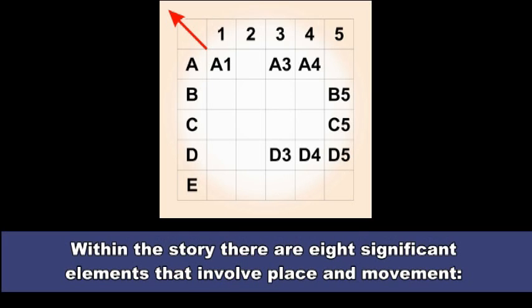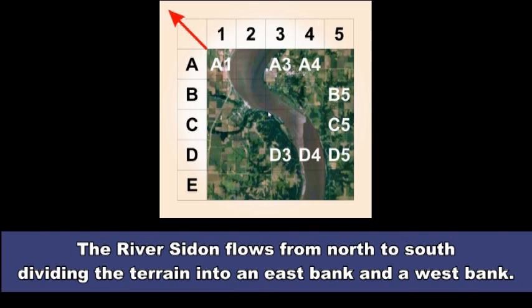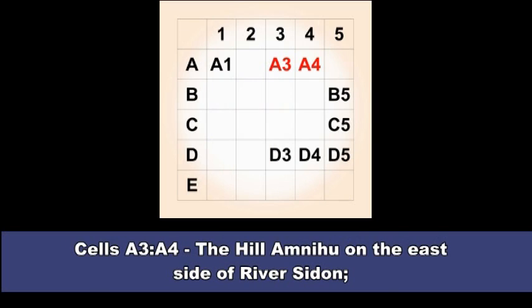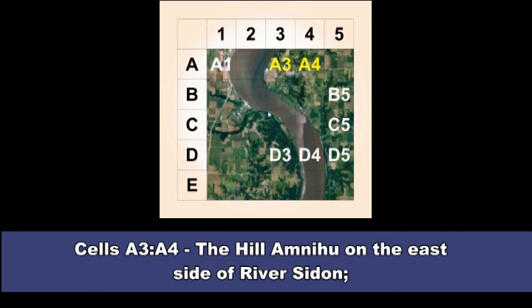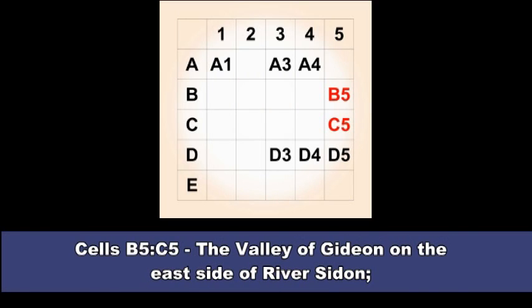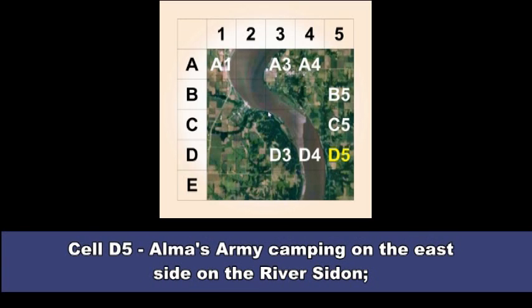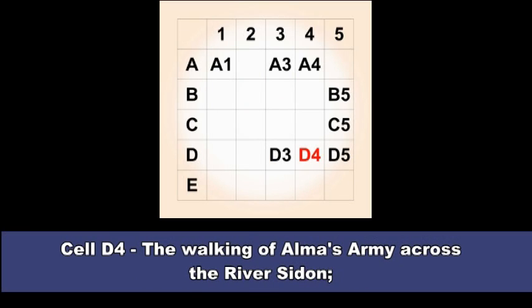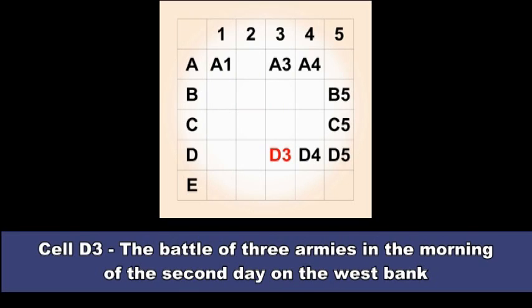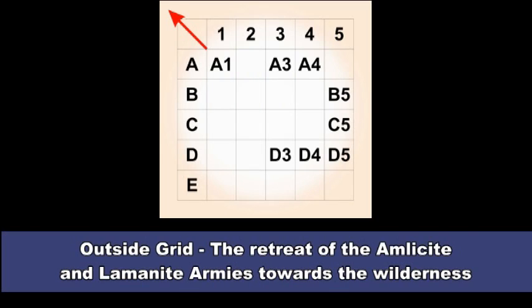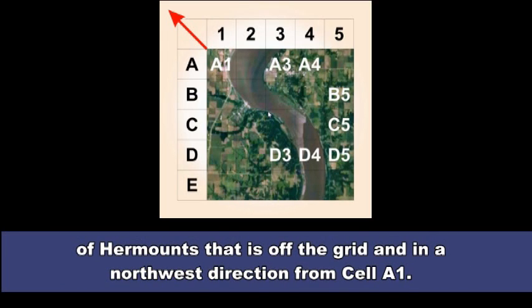Within the story there are eight significant elements that involve place and movement. The river Sidon flows from north to south dividing the terrain into an east bank and a west bank. Cell A1, the city of Zarahemla on the west side of river Sidon. Cells A3 colon A4, the hill Emmehu on the east side of river Sidon. Cells B5 colon C5, the valley of Gideon on the east side of river Sidon. Cell D5, Alma's army camping on the east side on the river Sidon. Cell D4, the walking of Alma's army across the river Sidon. Cell D3, the battle of three armies in the morning of the second day on the west bank and in the river Sidon. Outside grid, the retreat of the Amlicite and Lamanite armies towards the wilderness of Hermounts that is off the grid and in a northwest direction from cell A1.